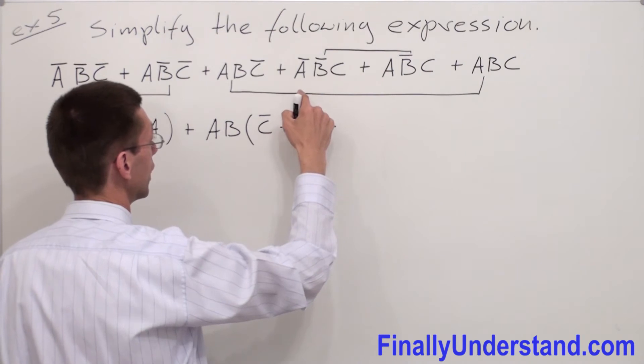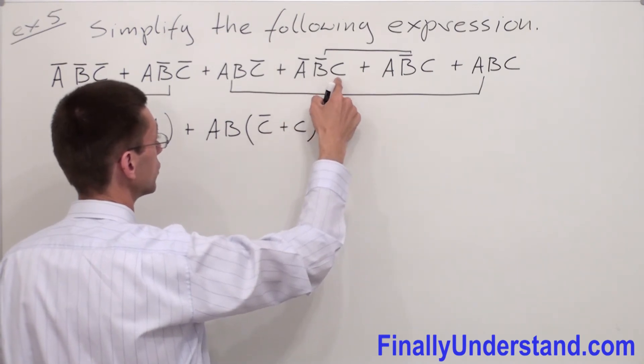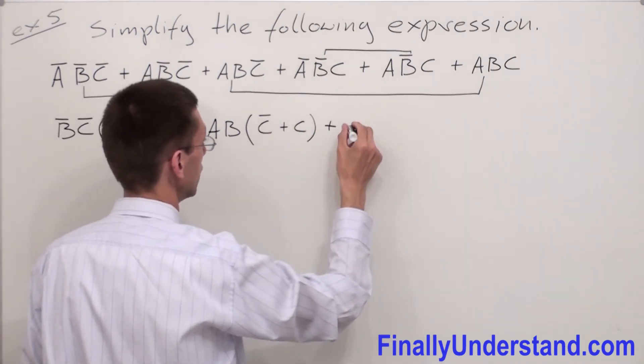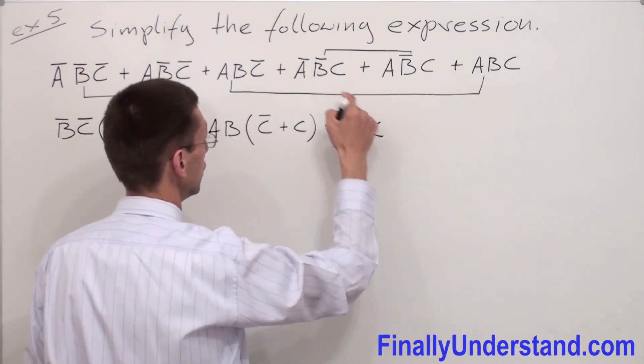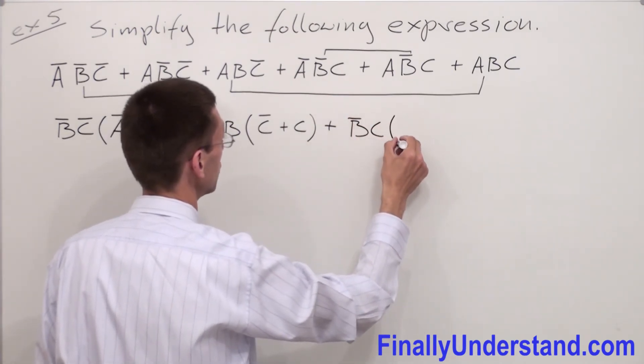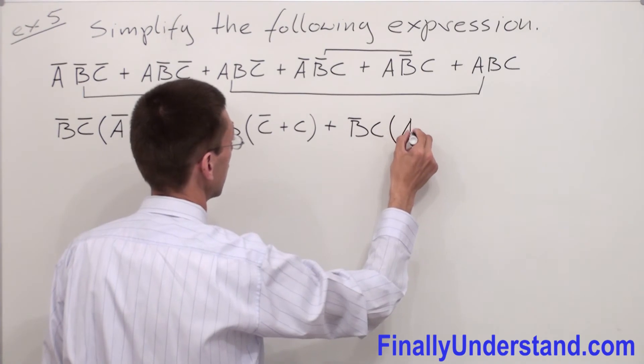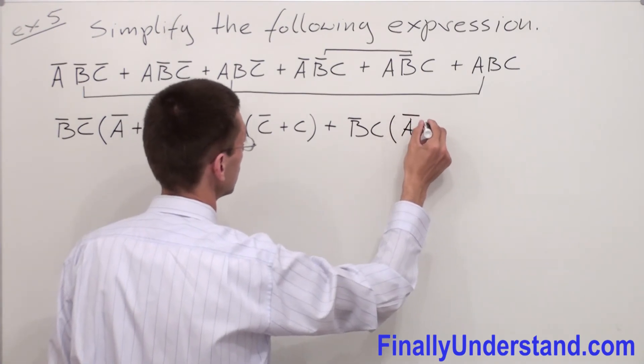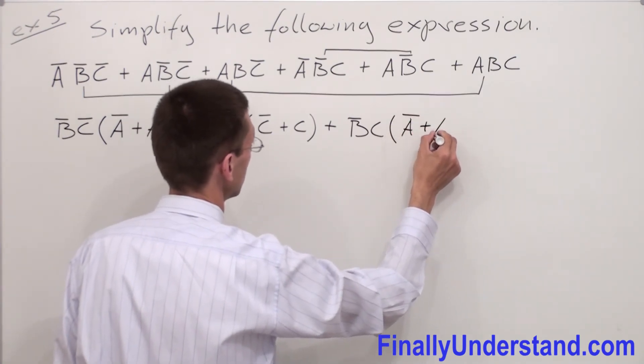Plus, I'm going to have B̄C. B̄C. I'm going to factorize B̄C from these two terms. And inside of the parenthesis I'm going to have Ā plus A.